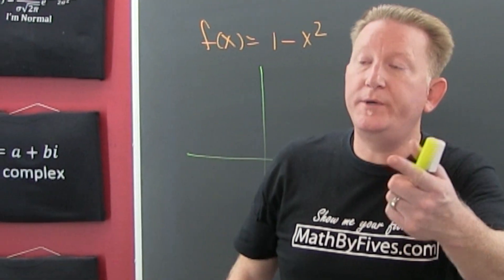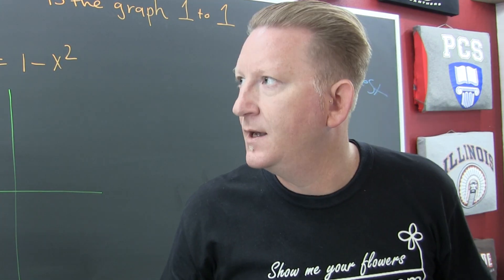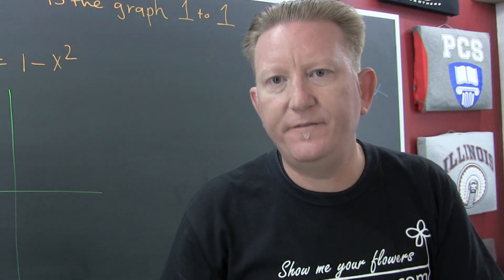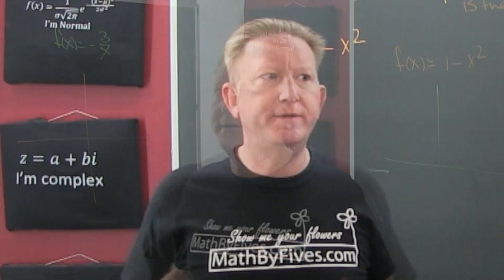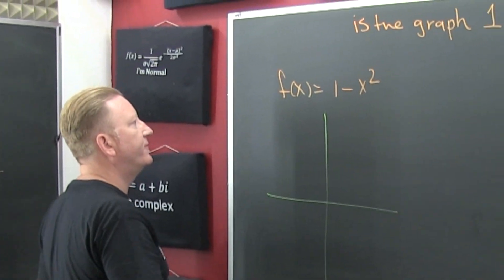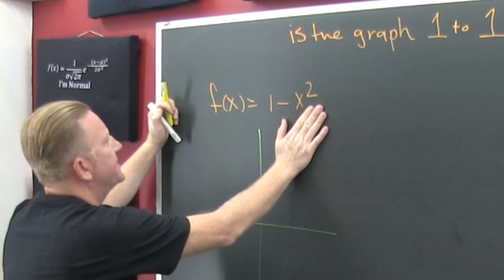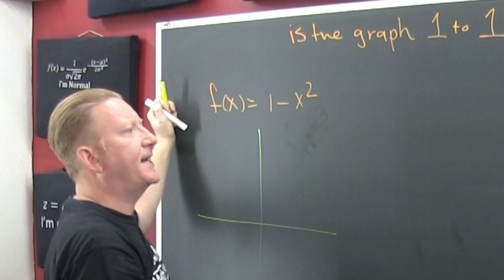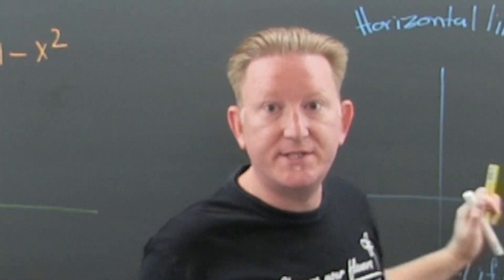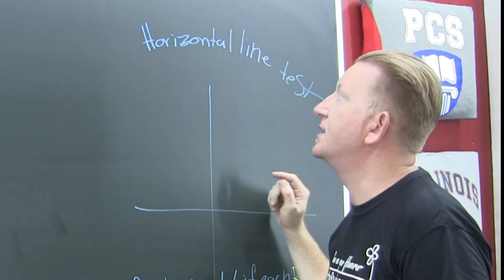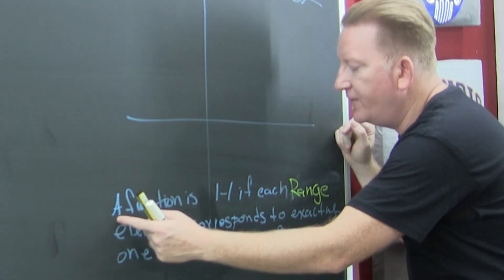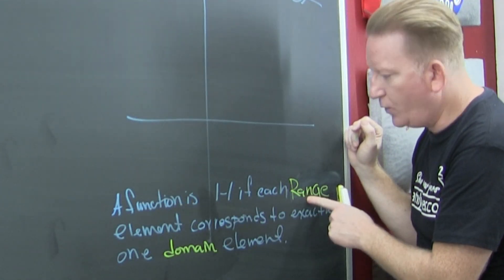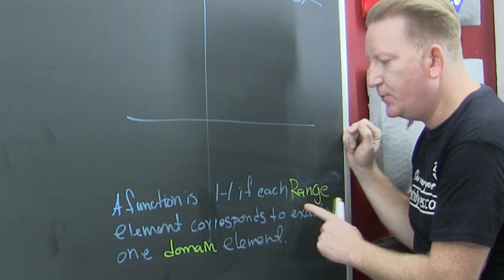Alright, what are we doing? Looks like we're graphing functions and determining whether or not they're one-to-one. That's going to be important for inverses. So I'm looking at this one here, but I need a technique. What's that technique? The horizontal line test. A function is one-to-one if each range element corresponds to exactly one domain element.